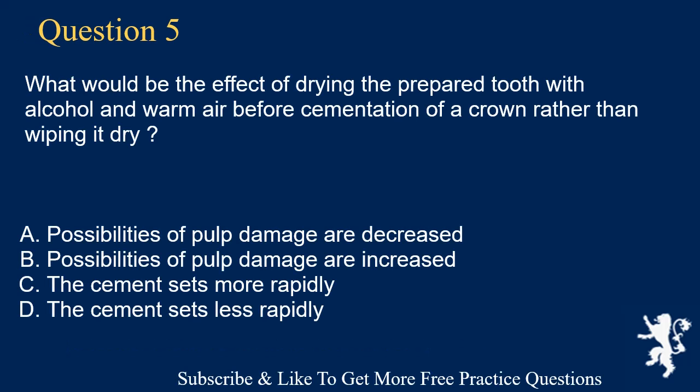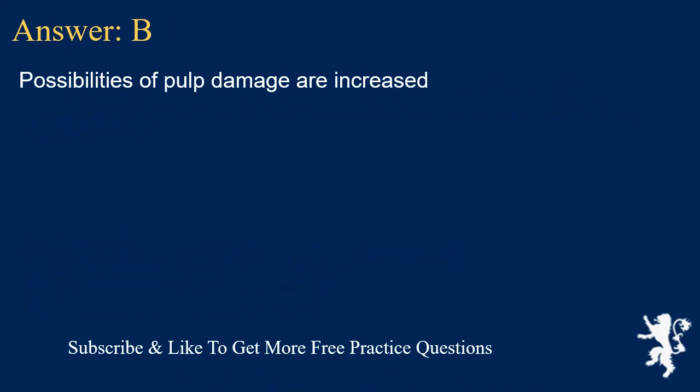Question 5. What would be the effect of drying the prepared tooth with alcohol and warm air before cementation of a crown rather than wiping it dry? a. Possibilities of pulp damage are decreased, b. Possibilities of pulp damage are increased, c. The cement sets more rapidly, d. The cement sets less rapidly. Answer: B. Possibilities of pulp damage are increased.